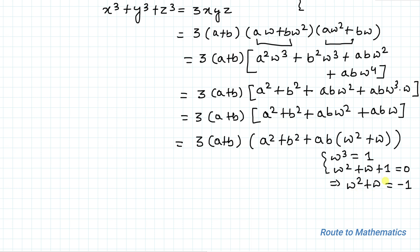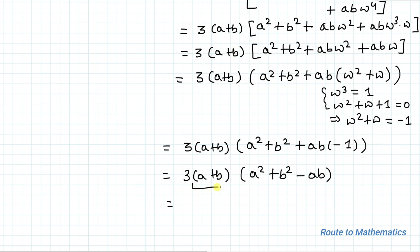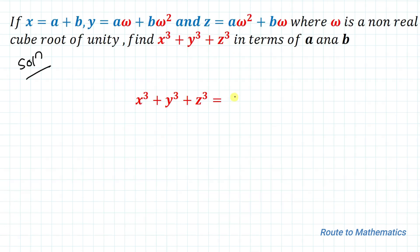We know that omega squared plus omega plus 1 equals 0, which implies omega squared plus omega equals minus 1. Substituting this value, we get 3 multiplied with (a plus b) multiplied with (a squared plus b squared plus ab times minus 1), which equals 3(a plus b)(a squared plus b squared minus ab). Applying the algebraic identity for a cubed plus b cubed, we get 3 multiplied with (a cubed plus b cubed). Thus the answer for x cubed plus y cubed plus z cubed in terms of a and b is 3(a cubed plus b cubed).